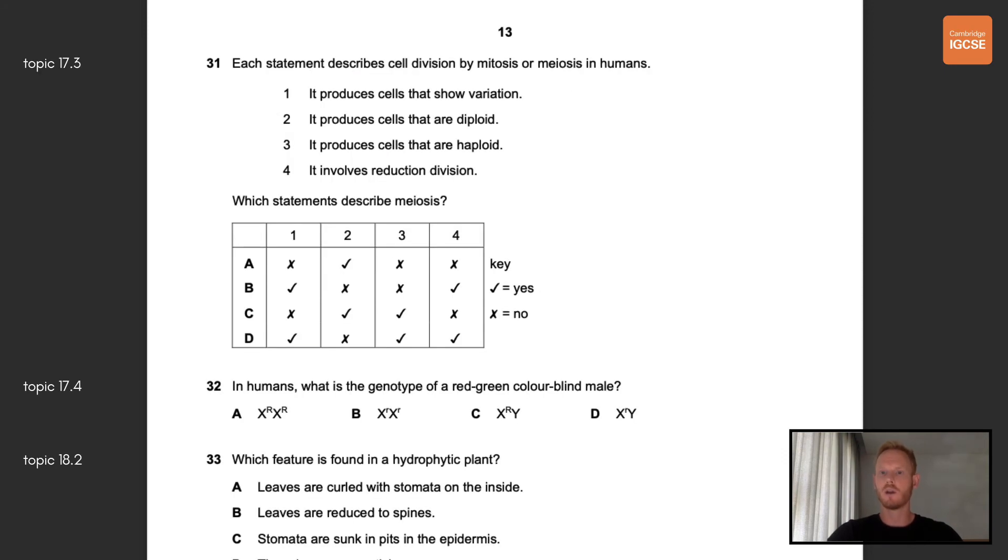Question 31, each statement describes cell division by mitosis or meiosis in humans. Which statements describe meiosis? Meiosis is a reduction division in which the chromosome number is halved from diploid to haploid, resulting in genetically different cells. Points 1, 3, and 4 all relate to meiosis, so the correct answer is D. Number 32, in humans what is the genotype of a red-green colorblind male? Red-green colorblindness is a sex-linked characteristic, meaning the gene is located on a sex chromosome. Females are XX and males are XY, so the answer has to be either C or D. Now the allele for colorblindness is recessive, so the correct answer is D.